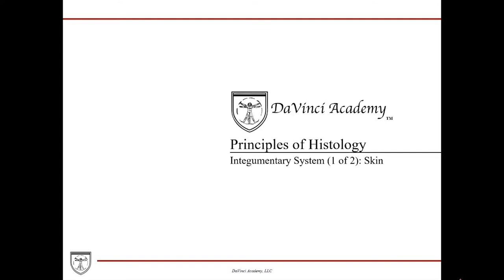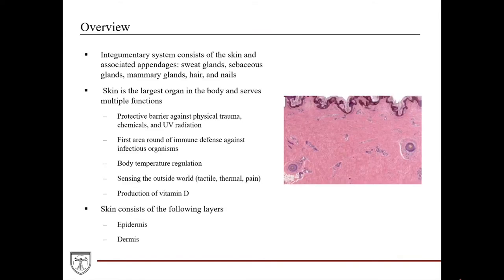This is the first of two lectures for the integumentary system. In the first lecture, we're going to cover the skin. The integumentary system consists of the skin and its associated appendages such as the sweat glands, the sebaceous glands, mammary glands, hair, and nails. The skin is the largest organ in the body, and as a result, it serves multiple functions. The skin is our contact point with the outside world, so it's a protective barrier against physical trauma — a first barrier against trauma reaching deeper into the body and damaging any underlying organs or tissues.